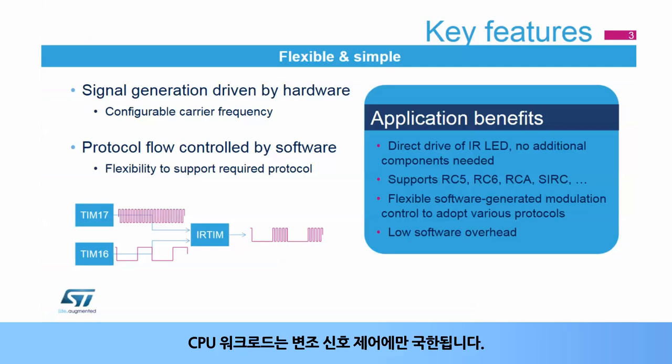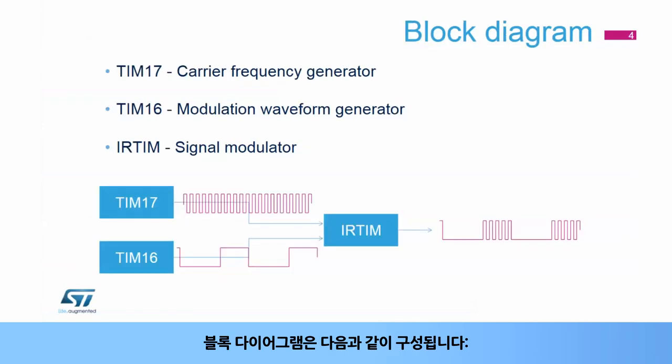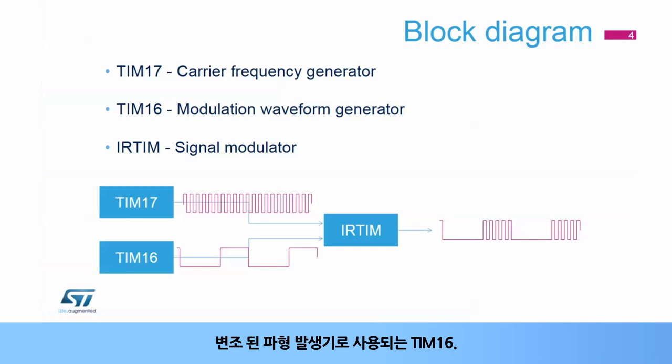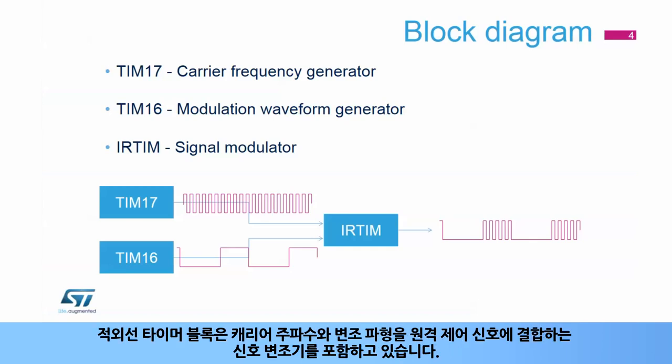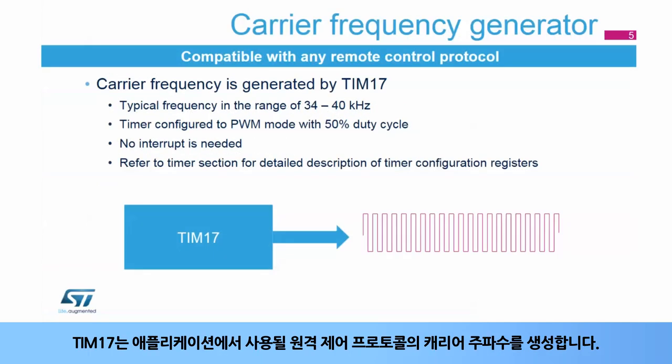The CPU workload is limited to the control of the modulation signal only. The block diagram consists of timer 17 used as a carrier frequency generator, timer 16 used as the modulated waveform generator, and the infrared timer block contains the signal modulator which combines the carrier frequency and the modulation waveform into the remote control signal.